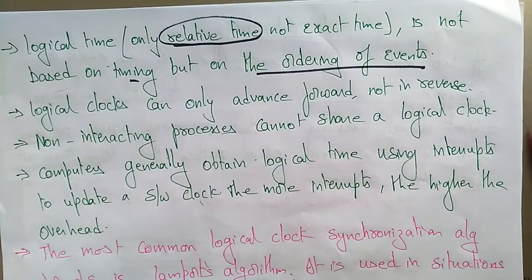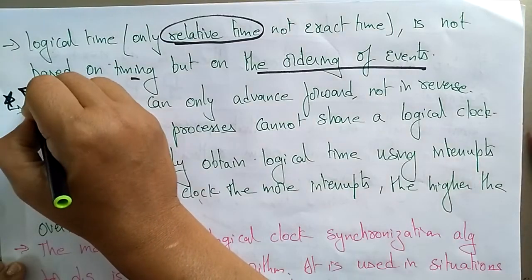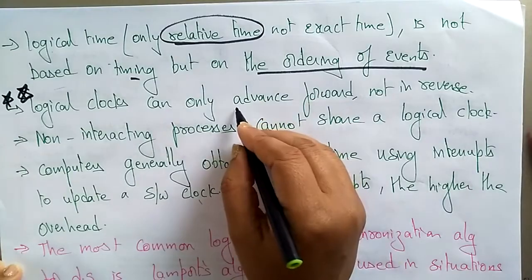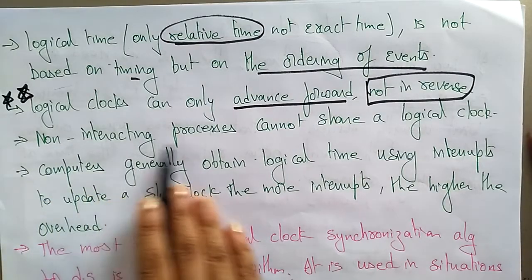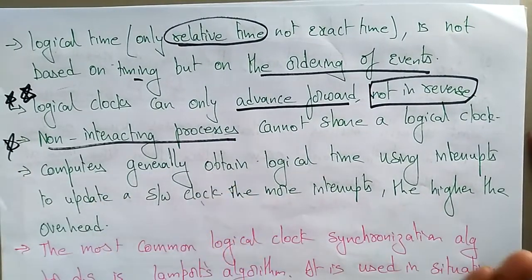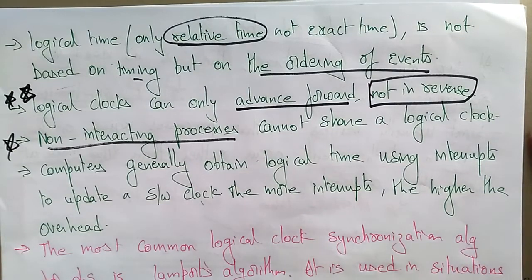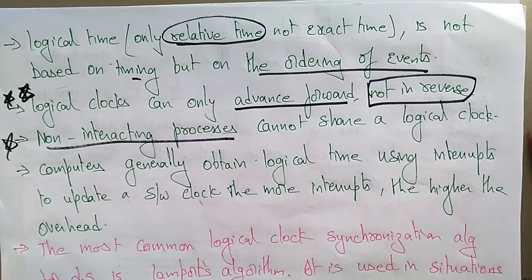The definition of logical time: logical time is not based on timing but on the ordering of events. Logical clocks can only advance forward, not in reverse — this is an important point to remember. Logical clocks can only move forward. Also, non-interacting processes cannot share a logical clock. If there are non-interacting systems, then synchronization is not needed and they cannot share a logical clock. They can only share and interact when they are connected.